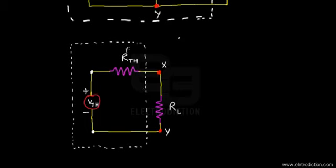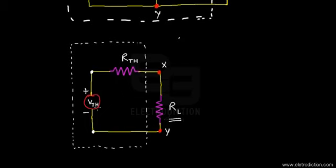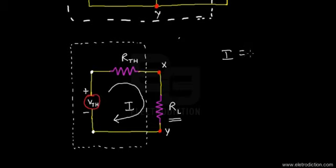Taking the simplified network and applying the compensation theorem, the change in current through the load resistance RL would be represented by including a voltage source in series with RL. In order to prove the theorem, let's calculate the current that should flow through RL in the first case. The magnitude of current I is given by VTH divided by RTH plus RL — call this equation one.